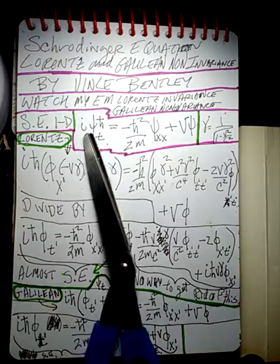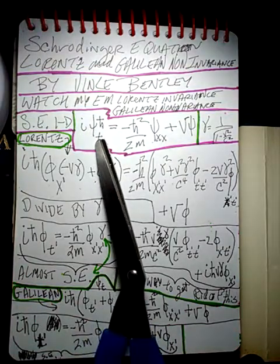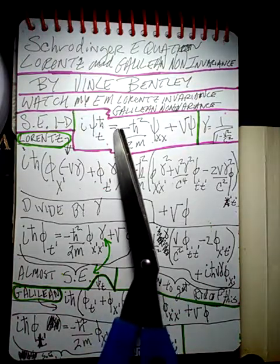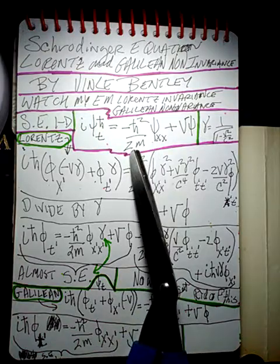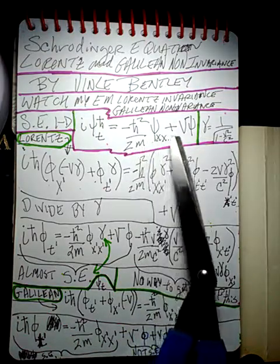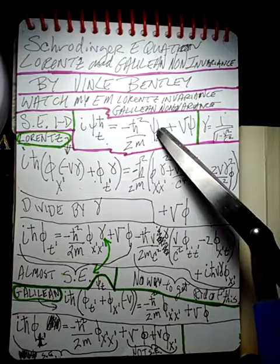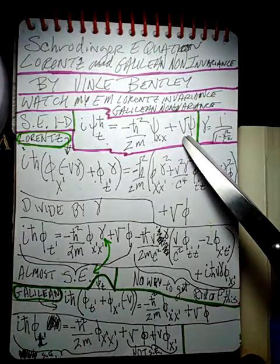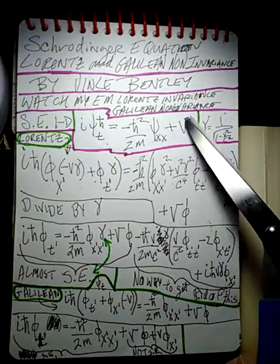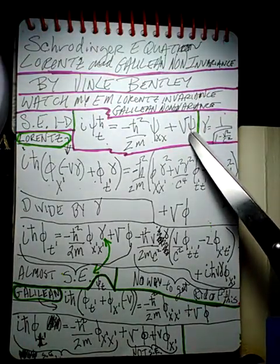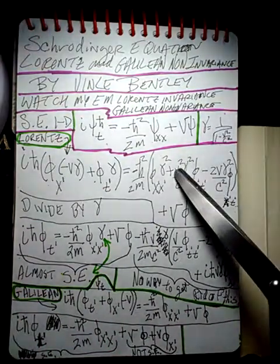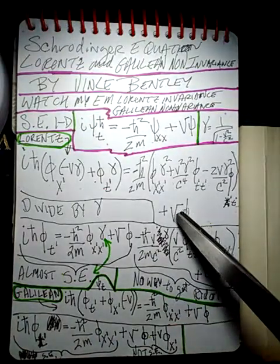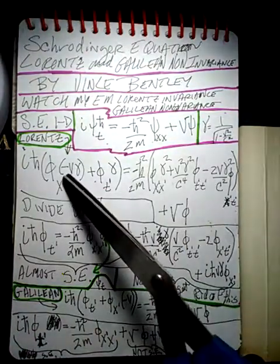Let me read off Schrödinger's equation normally. It's i h-bar times the partial derivative of psi with respect to t, equals negative h-bar squared divided by 2 times the mass times the second partial derivative of psi with respect to x, plus the potential energy — written with a little slash — times psi. Wherever you see V with a little slash, that's potential energy; plain V is velocity.